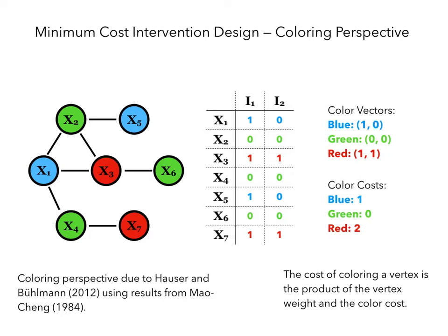This corresponds to a proper coloring of the graph, where the colors are represented by binary vectors. Each color has a weight, which is the sum of the elements of this vector. We will thus consider the minimum cost intervention design problem as a special weighted coloring problem.